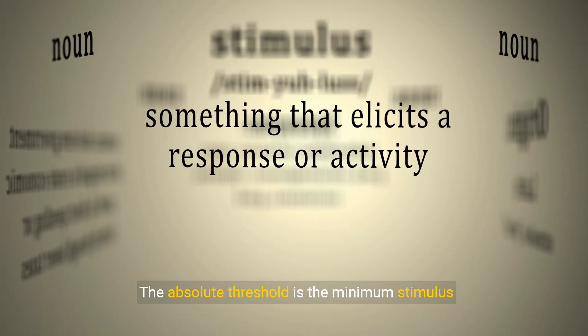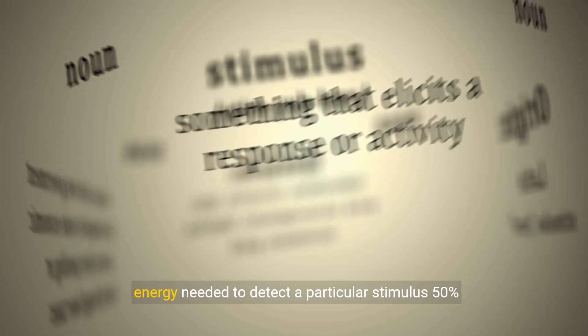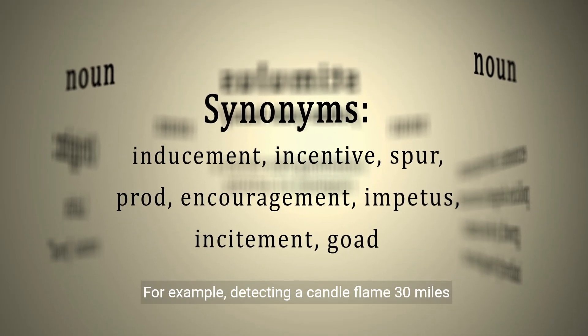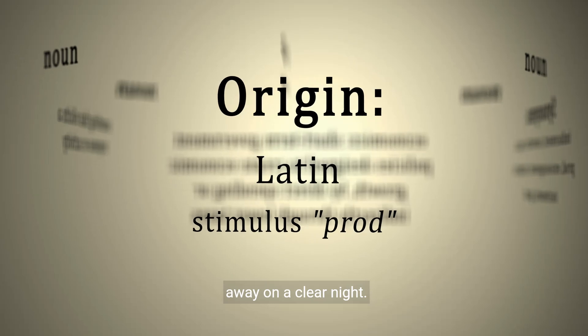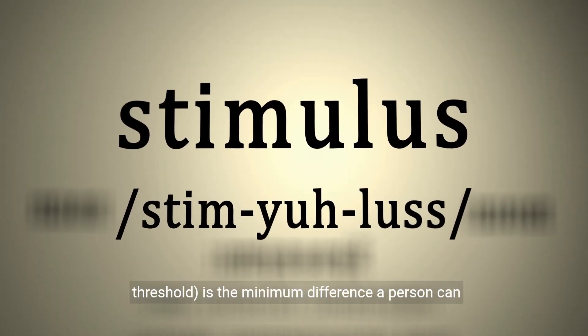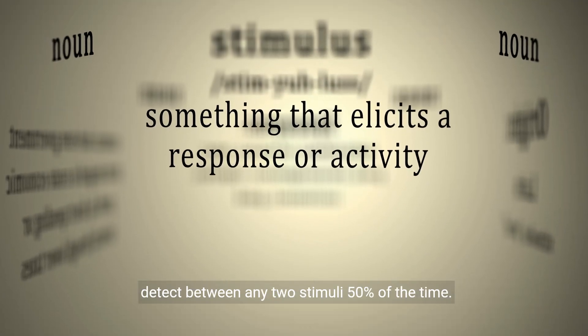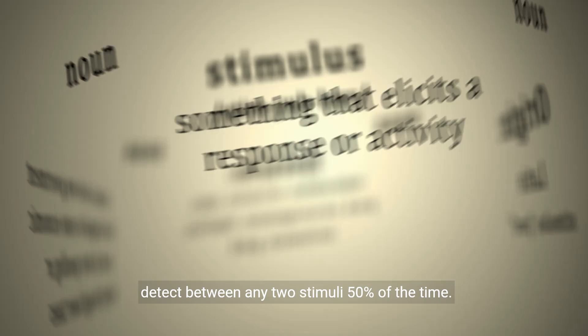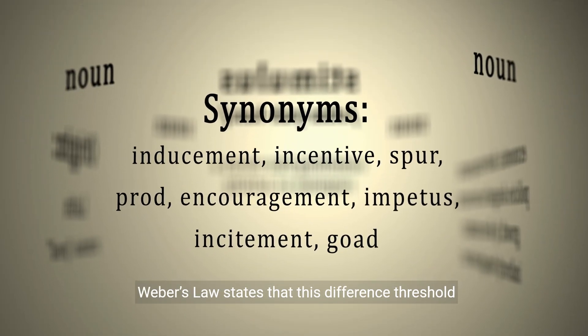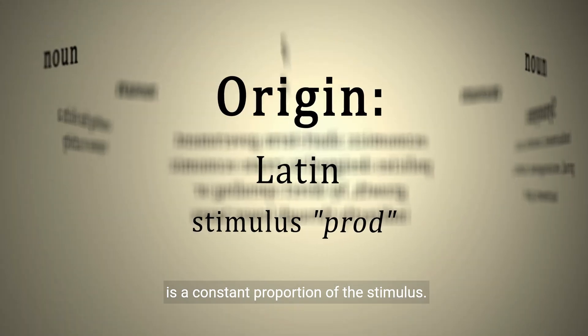The absolute threshold is the minimum stimulus energy needed to detect a particular stimulus 50% of the time — for example, detecting a candle flame 30 miles away on a clear night. The just noticeable difference, or difference threshold, is the minimum difference a person can detect between any two stimuli 50% of the time. Weber's law states that this difference threshold is a constant proportion of the stimulus.